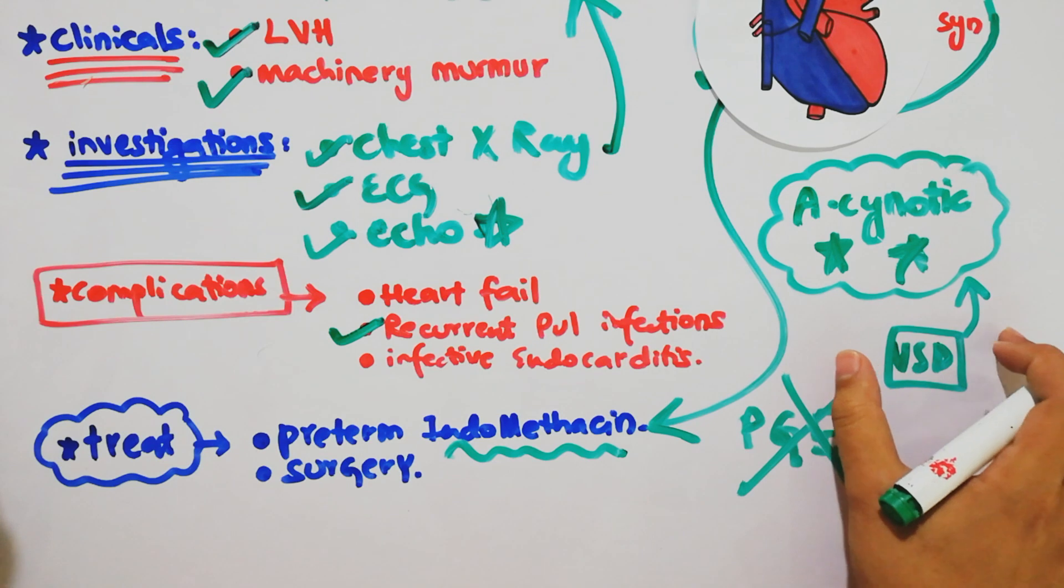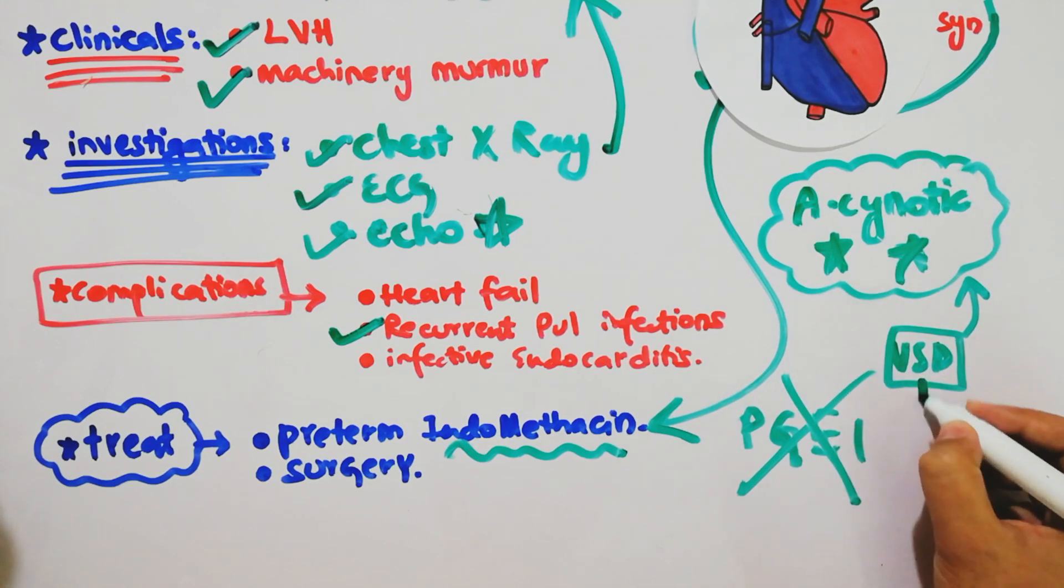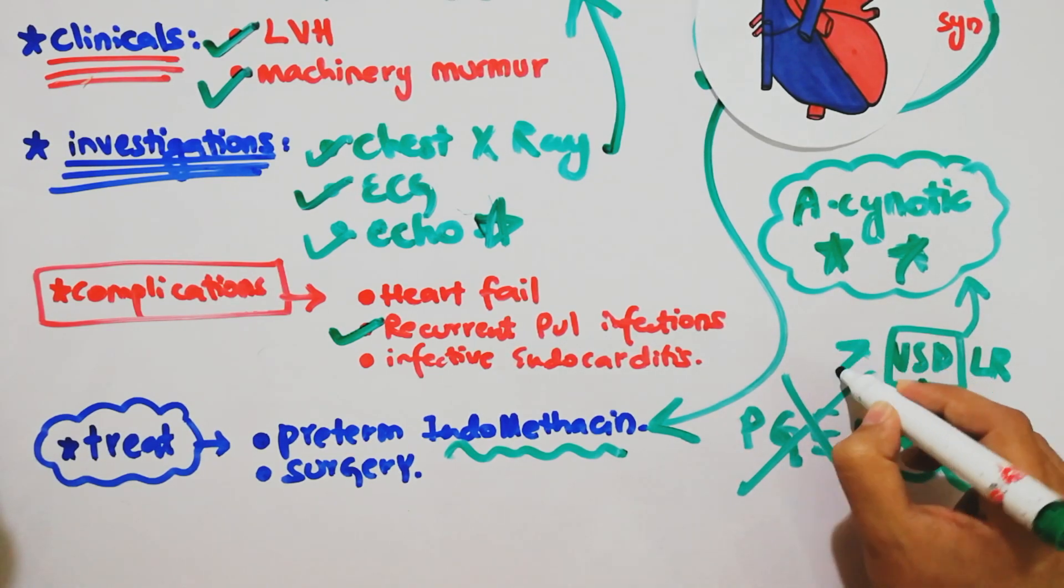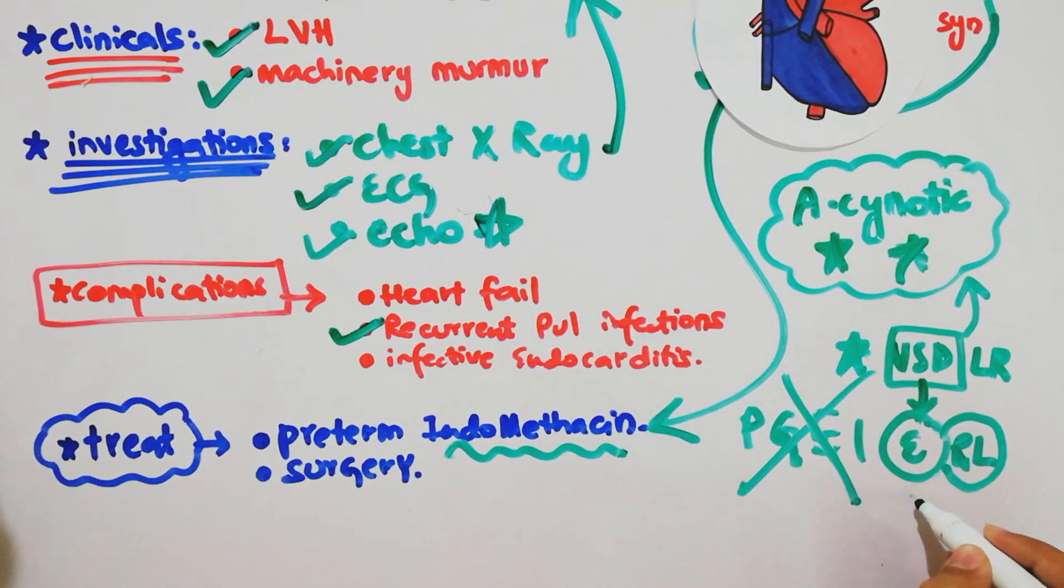When pulmonary hypertension develops, Eisenmenger phenomenon occurs. The left to right shunt becomes right to left shunt, and the patient becomes cyanotic.